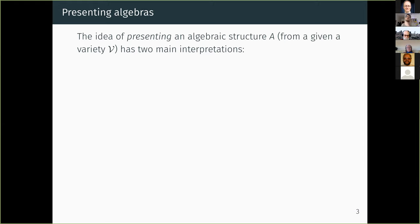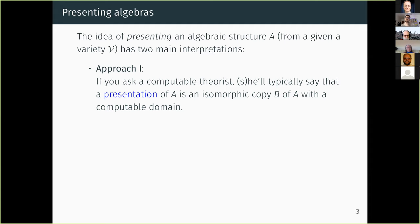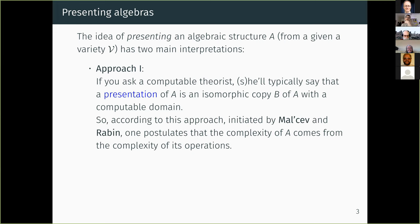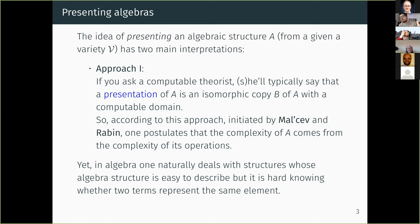Let's start with word problems. The idea of presenting an algebraic structure is absolutely mainstream in the literature, but it has two main interpretations. In computability theory, a presentation of a structure A is just an isomorphic copy of it with a computable domain — you postulate that the complexity of the structure comes from the complexity of its operations. But in algebra, the mainstream approach is different: you deal with structures that are easy to describe, but in which a priori it may be hard to know whether two terms represent the same element.